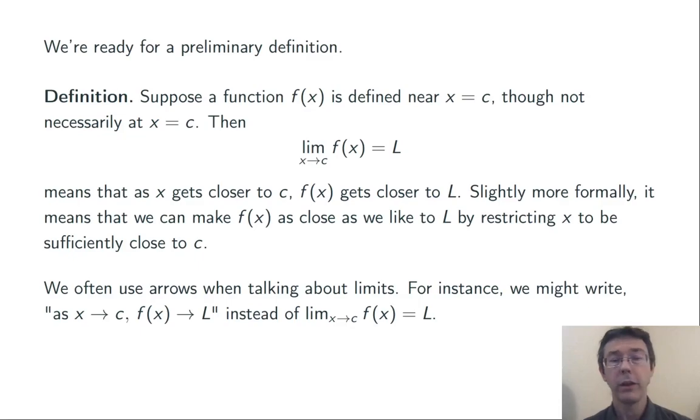A tiny bit more notation. Sometimes we're a little bit less formal, and we write, as x right arrow c, as x goes to c, f(x) right arrow L, f(x) goes to L. And that means the same thing as limit as x goes to c, f(x) equals L.